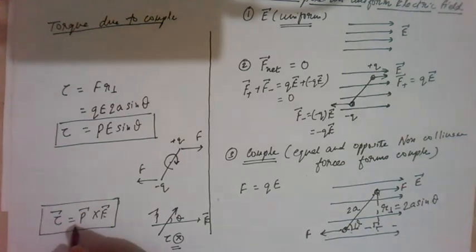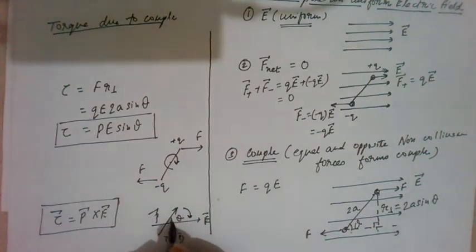It is simply written as this torque equals to P vector cross E vector. As we know in right hand thumb rule, we will stretch our right hand in the direction of P vector, curling fingers about E vector and as you curl the fingers about E vector, the thumb which will point inward will give you the direction of torque.